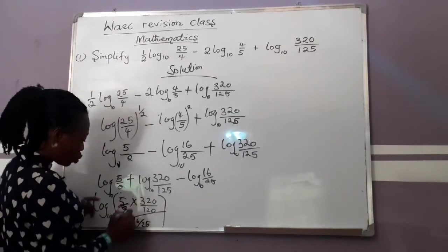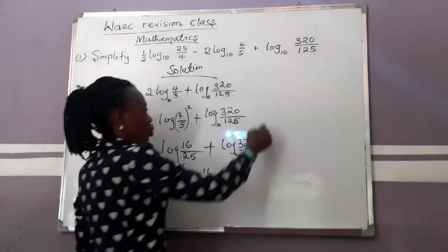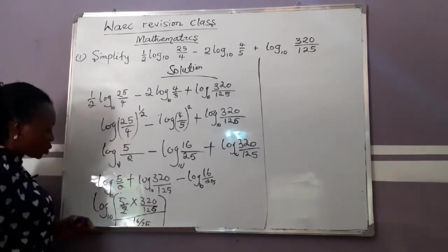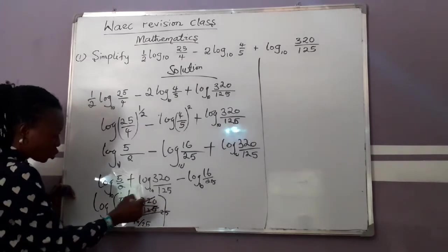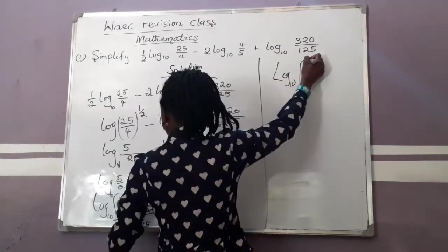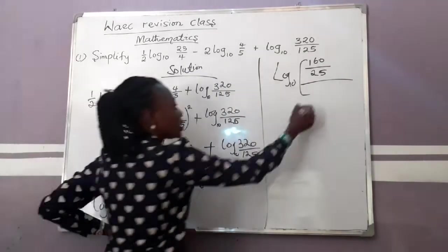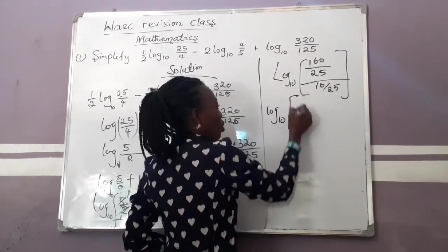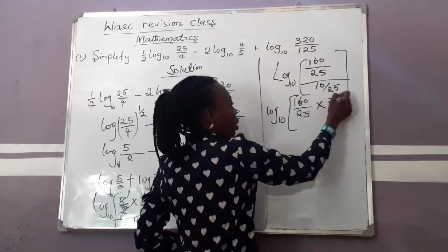So we compute: 5 times 320 gives 1600, and 2 times 125 gives 250. Simplifying: numerator becomes 1 times 160 = 160, denominator becomes 1 times 25 = 25. We still have our divisor of 16 over 25. So this becomes log base 10 of (160 over 25) divided by (16 over 25). When dividing by a fraction, the denominator flips up.